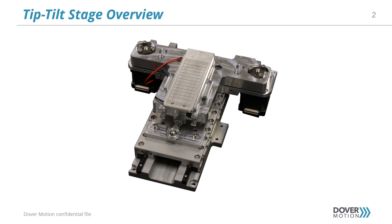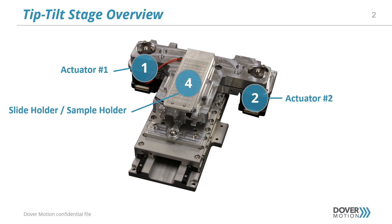Tip tilt stages are used in various applications to precisely control the angular position of an object in two rotational degrees of freedom. In the example shown here, the vacuum chuck slide or microfluidic holder is shown in item number four. Items number one and number two are the tip tilt actuators, and item number three shows the pivot point for the rotation.